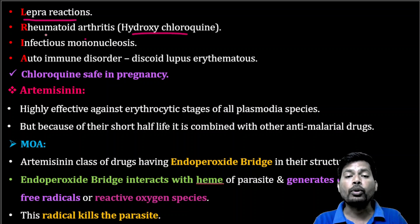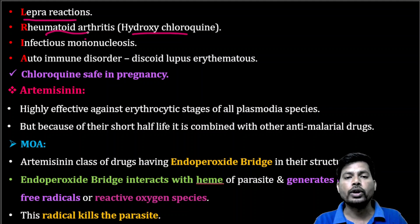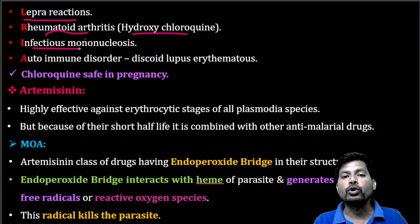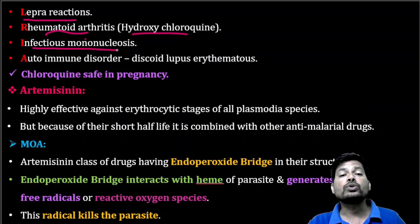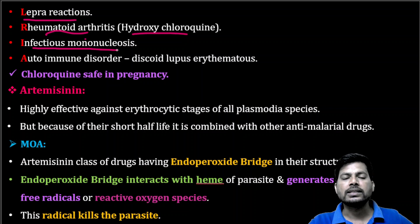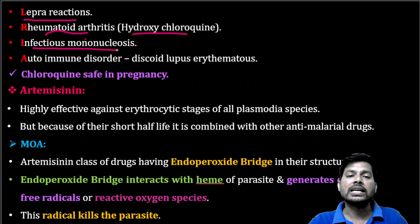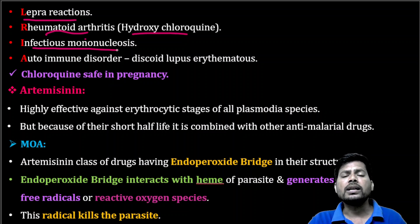Chloroquine in the form of hydroxychloroquine helps in the treatment of rheumatoid arthritis, a type of autoimmune disease that mainly affects the synovial joints. Chloroquine also helps in the treatment of infectious mononucleosis, generally known as the 'kissing disease,' transferred from person to person through saliva. Most people who get this disease recover easily.